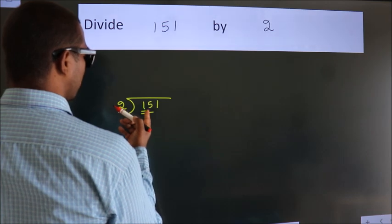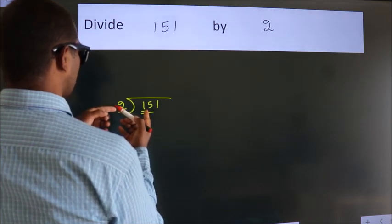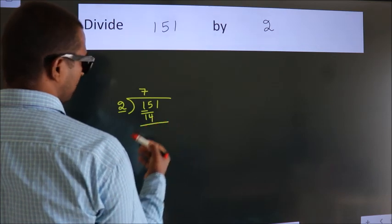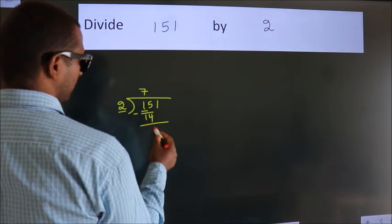A number close to 15 in 2 table is 2 7s 14. Now, we should subtract. We get 1.